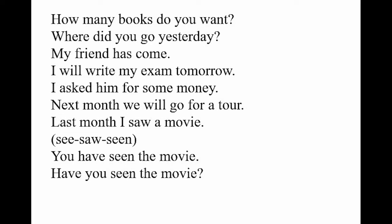You have seen the movie. This is present perfect tense. We use 'have' because 'you' is there. Had it been 'she' or 'he,' we would say 'has.' 'Seen' is the third form of 'see' — see, saw, seen. To convert to a question, we bring 'have' to the beginning: Have you seen the movie? So in questions, do, did, have, or has will all come to the beginning.